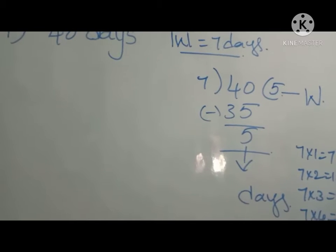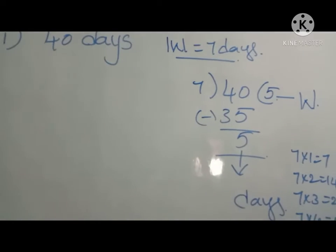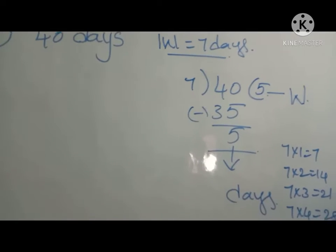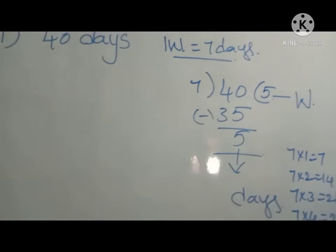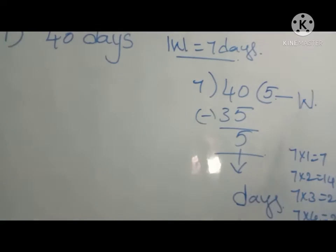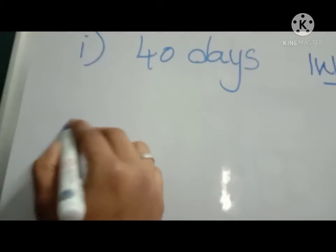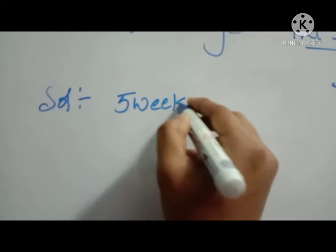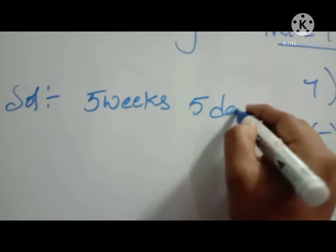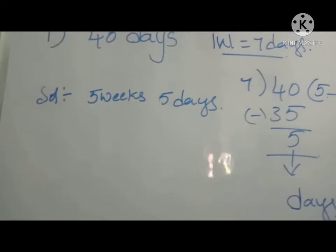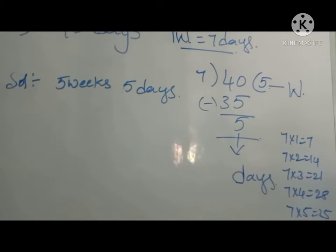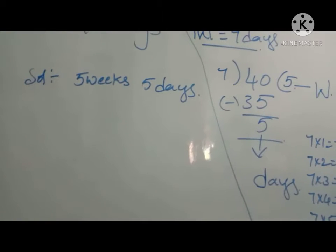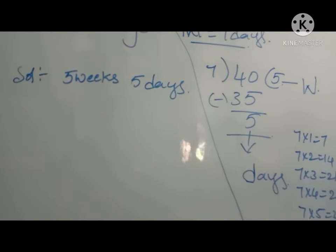1 week equals 7 days. Dividing 40 by 7: 7 fives are 35, so the remainder is 5. The remainder is days and the quotient is weeks. So the answer is 5 weeks and 5 days. First we do the division, then convert into higher units.